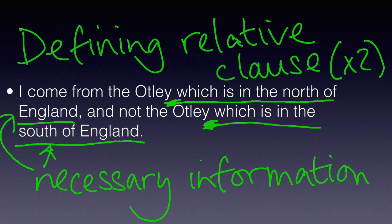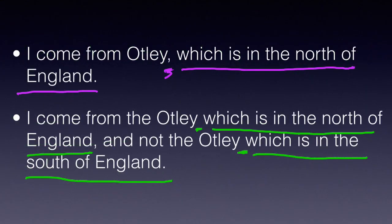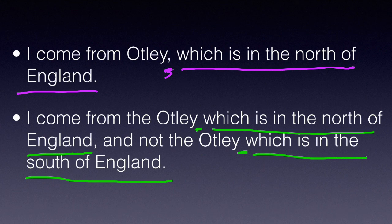With defining relative clauses, we never have a comma. You can now look at both sentences together. The first sentence is basically 'I come from Otley,' and we can add extra information if we want. In the second sentence, you need everything, because if we did not have the relative clauses, the sentence would be 'I come from Otley and not Otley.' So they really do define what we mean by each Otley.